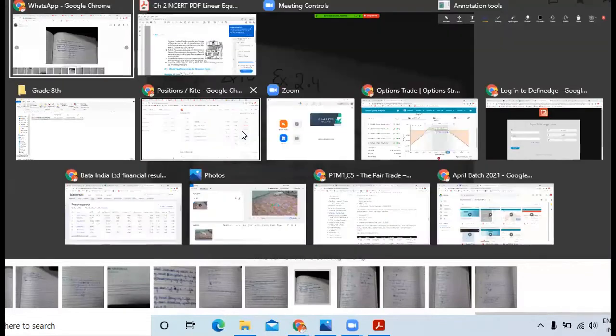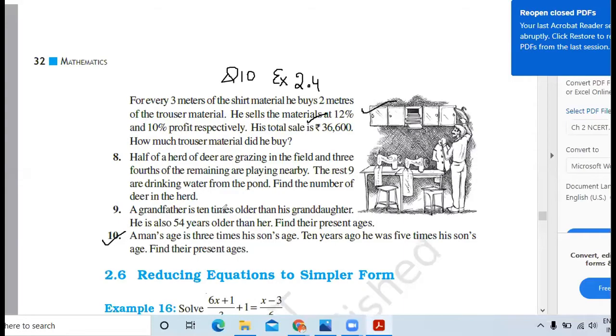Now read the question further. Ten years ago, he was five times his son's age. Very good. Ten years ago - what does ago mean? Before. Before.